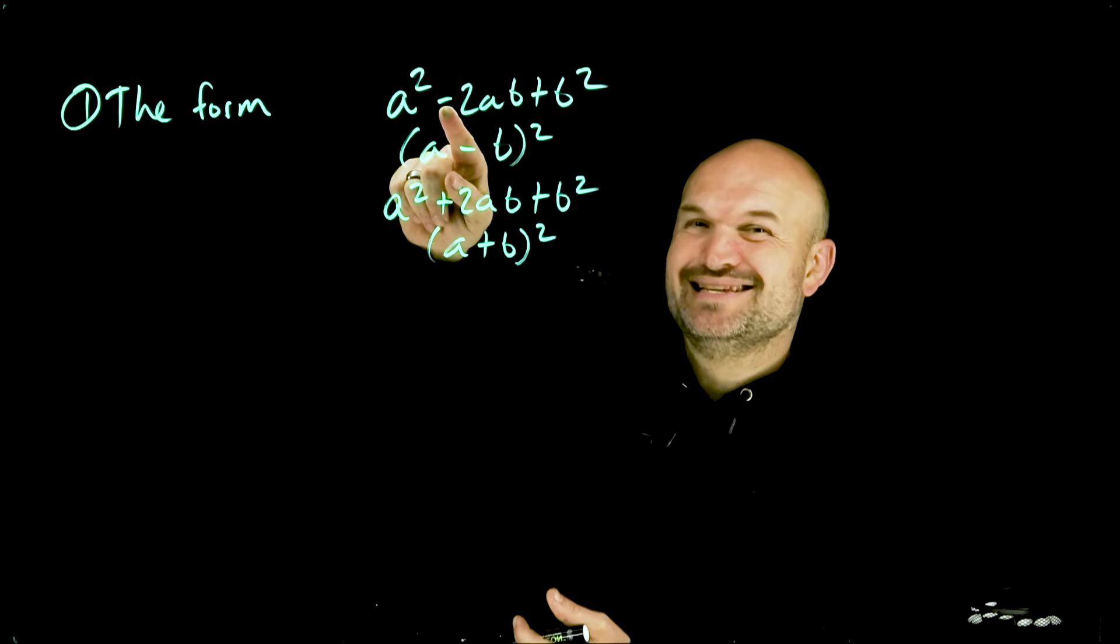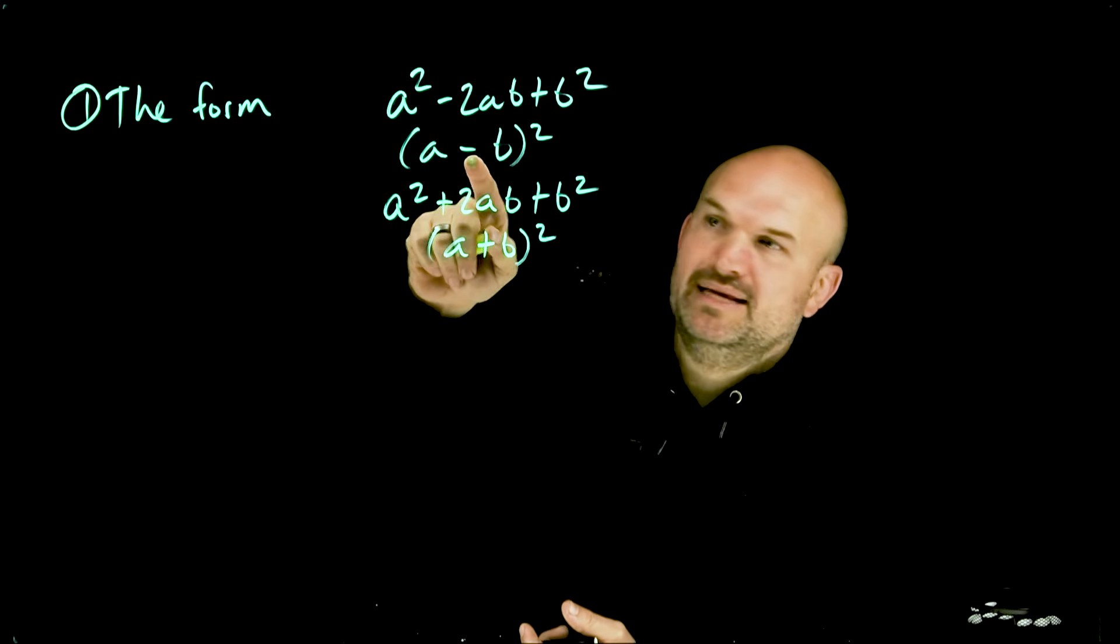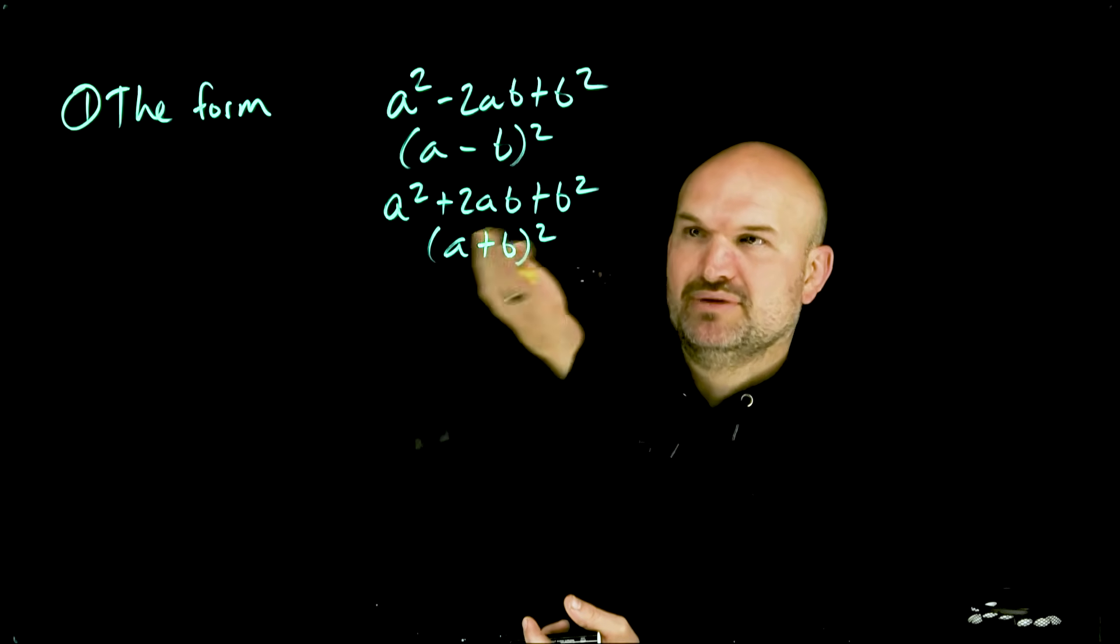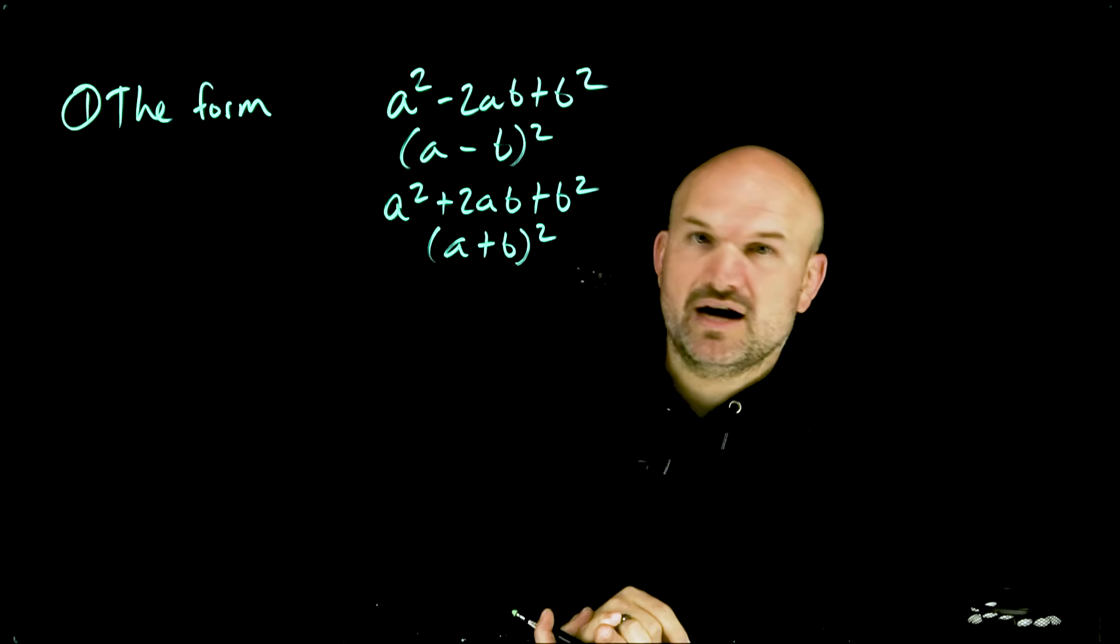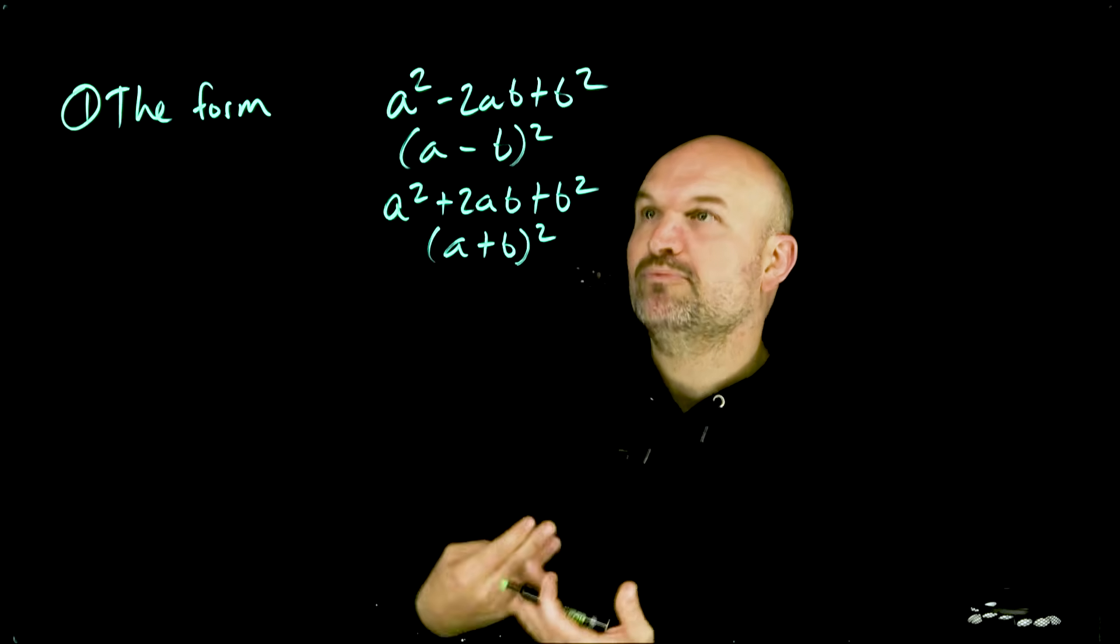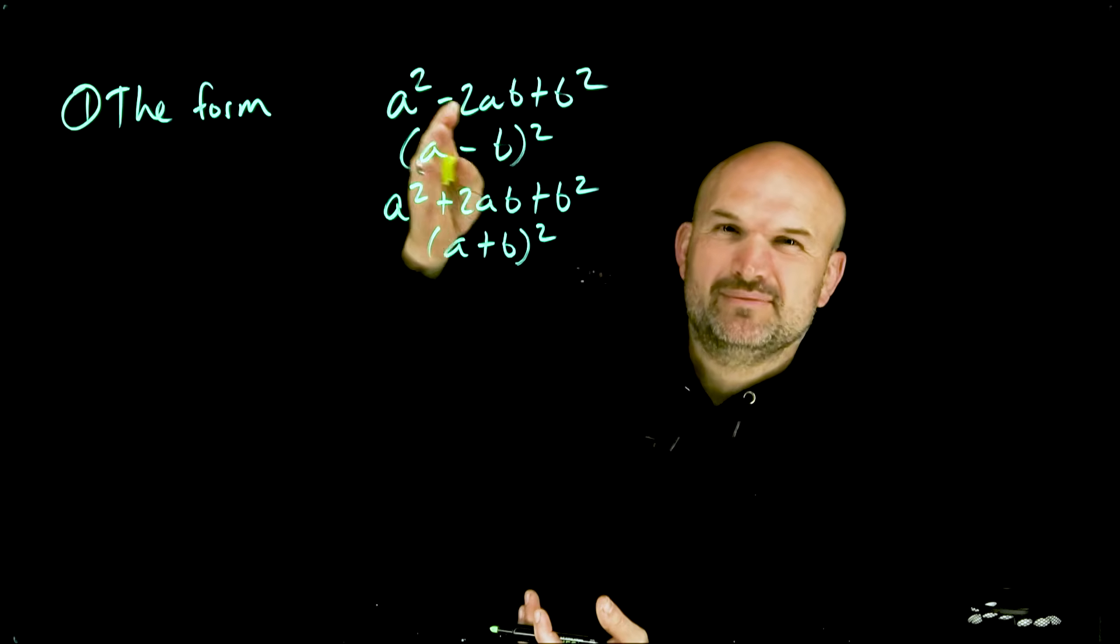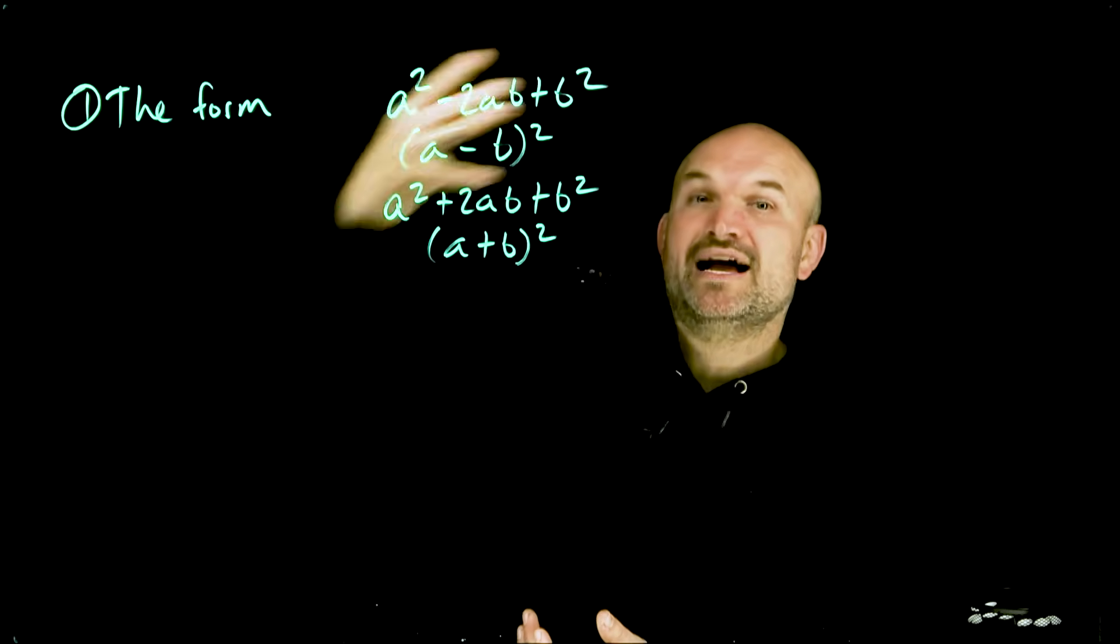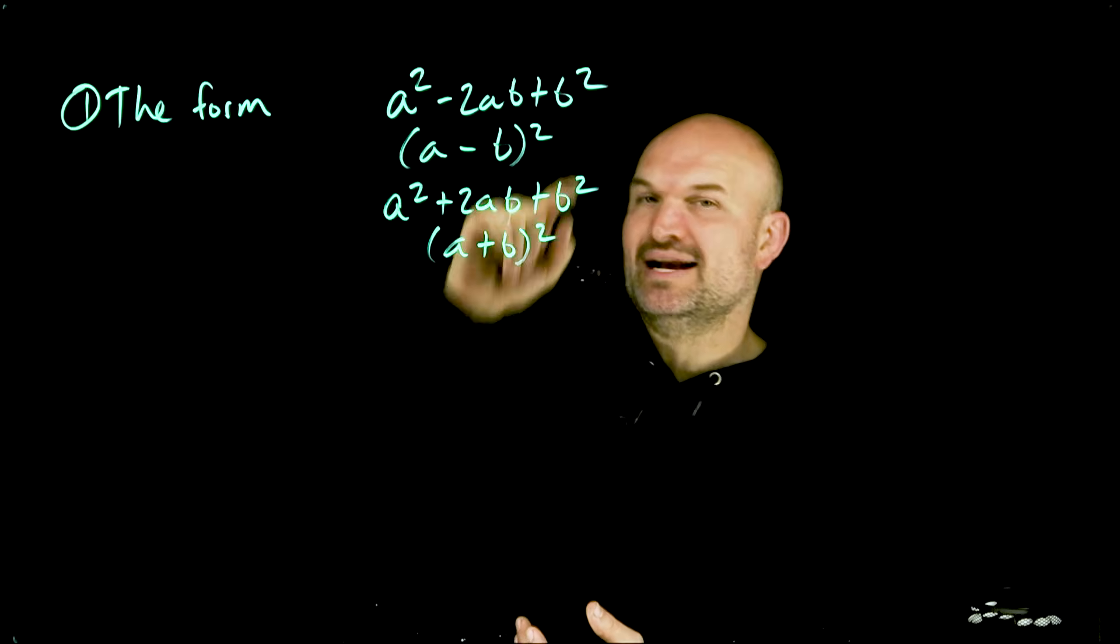So it's important—if your middle term is negative in the trinomial, then the middle term of your binomial squared is also going to be negative. And you can see this is the exact same thing with the positive: a squared plus 2ab plus b squared can be factored down into the binomial squared of a plus b. So it's important to make sure you look at and understand this form, because once you understand this form, you realize, 'Oh, I can see why my teacher didn't explain everything step by step.' Once you recognize that it's a perfect square trinomial, it's very easy to be able to rewrite it in factored form.